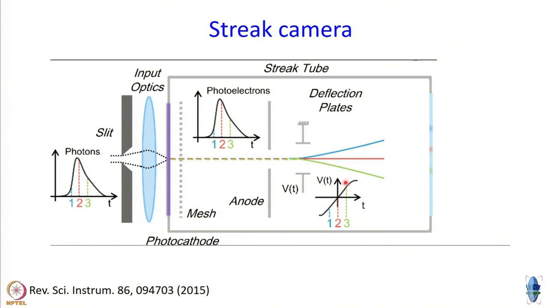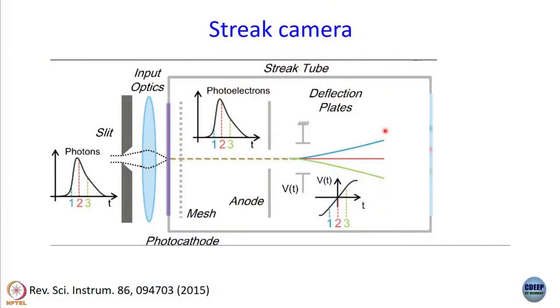So, when 3 passes, let us say this is the voltage. Then what will happen? 3 will be deflected accordingly. When 2 passes, the way we have drawn it, we are at zero. So, 2 will go straight. When 1 passes, it is on the other side. So, it will go up. So, what are we doing here? We are deflecting, but we are sending photoelectrons that arrive at different time in different directions.